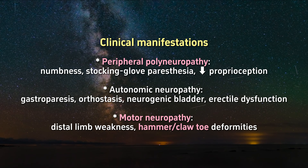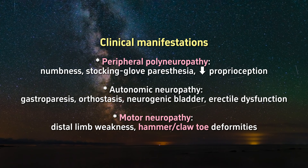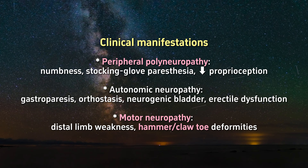Clinical manifestations include: peripheral polyneuropathy with numbness, stocking-glove paresthesia, and decreased proprioception; autonomic neuropathy with gastroparesis, orthostasis, neurogenic bladder, and erectile dysfunction; and motor neuropathy with distal limb weakness and hammer-claw-toe deformities.